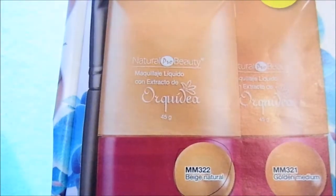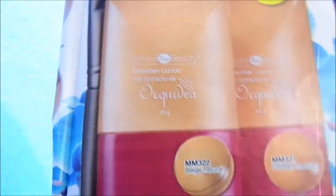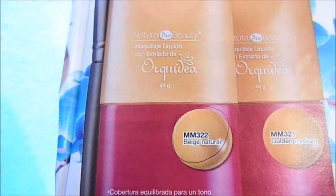Hello, today I'm going to talk about this liquid makeup with extracto of orchidia. It's from the linea Natural Pro Beauty. There are two tones, beige natural and golden medium.